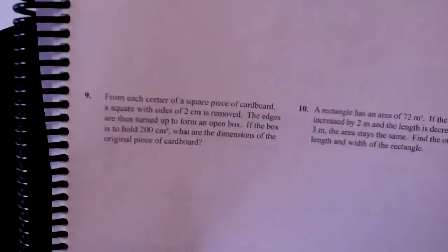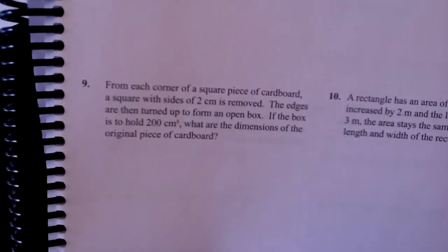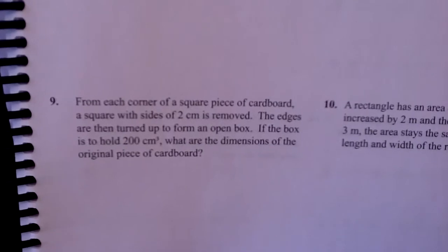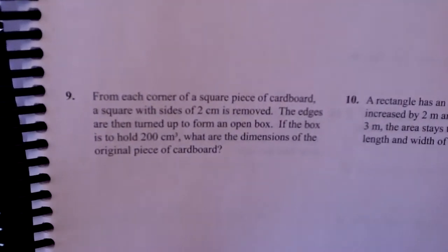This is getting just annoying, but anyways, here you go. From each corner of a square piece of cardboard, a square with sides of 2 cm is removed, and the edges are then turned up to form an open box. If the box is to hold 200 cubic centimeters, what are the dimensions of the original piece of cardboard?